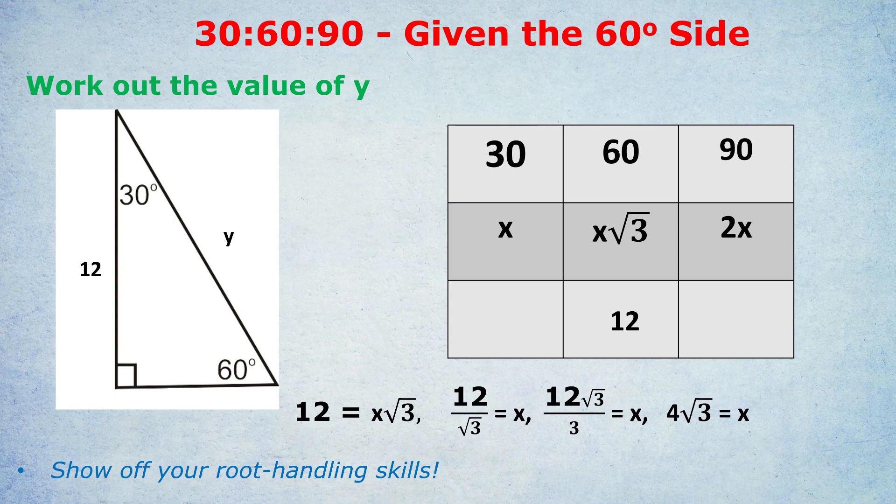But if x is 4√3, we can now fill in our box. x is 4√3, so that goes in the 30 degree column, and 2x will be 8√3. The question was work out the value of y, and y is the hypotenuse opposite to the 90 degrees. So y would be 8√3, and that's the answer.